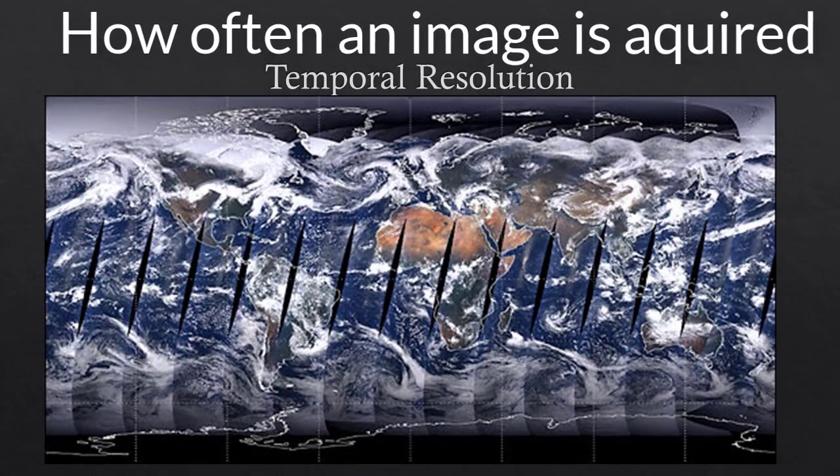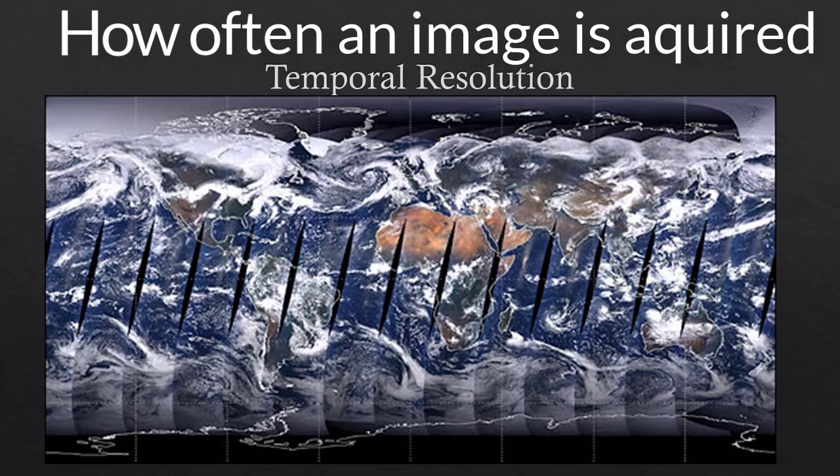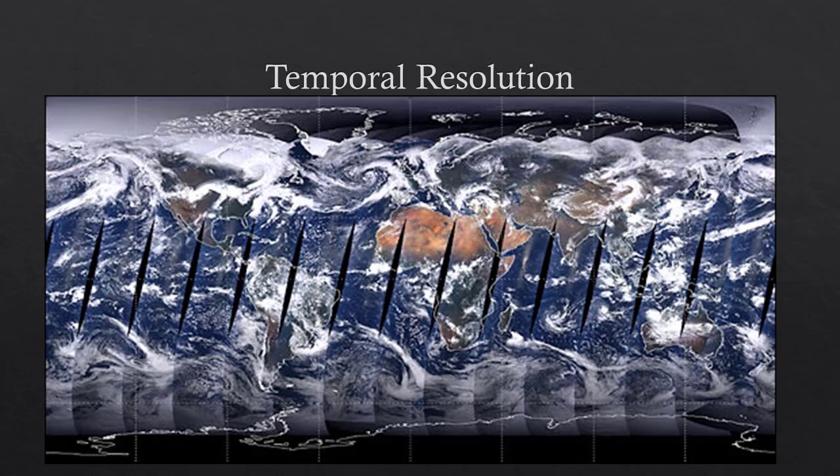Temporal resolution is how often an image is acquired. For many features of the Earth, frequent observations would not be necessary. Vegetation, for example, does not change so rapidly that daily observations are required. Fire, on the other hand, changes very rapidly. And for a sensor to be most useful, frequent acquisition is critical. As mentioned previously, there is a trade-off made in spatial resolution when a higher temporal resolution is required.